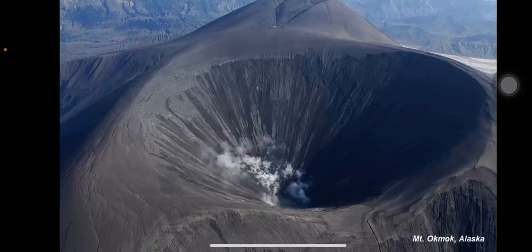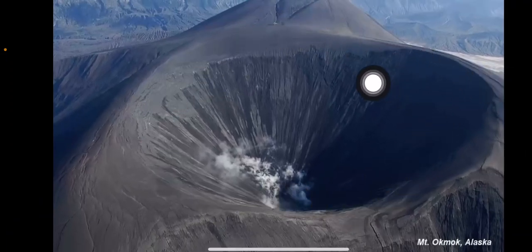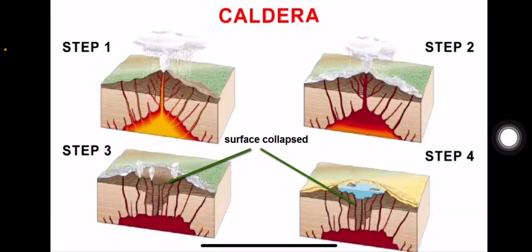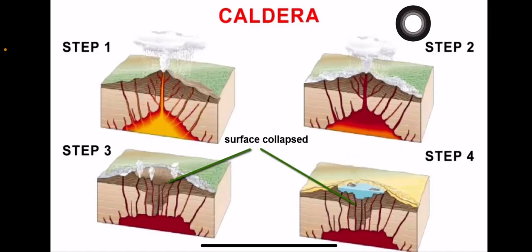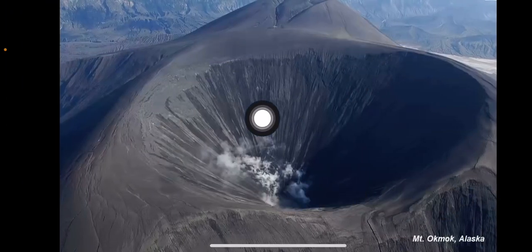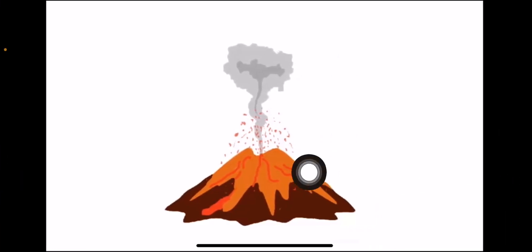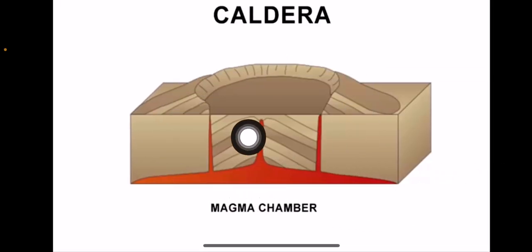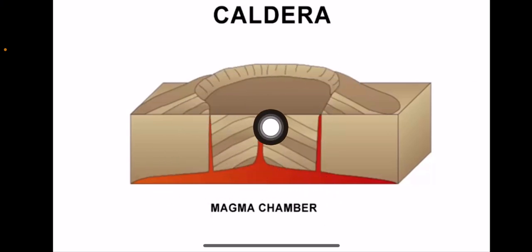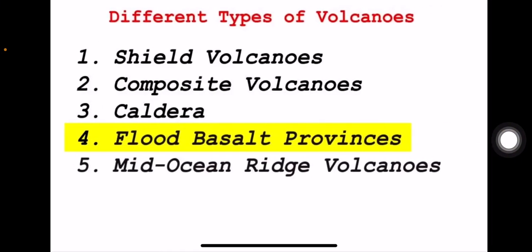Next is caldera. You can see a large opening in the caldera volcano. Caldera volcanoes are normally located in mountainous regions. The eruption speed is very high, which causes the surface to collapse. After the eruption, the speed decreases and the surface collapses inward, creating a burst-like depression — that is why it is called a caldera. Inside the caldera there is a magma chamber.